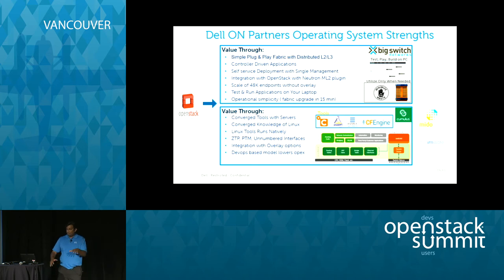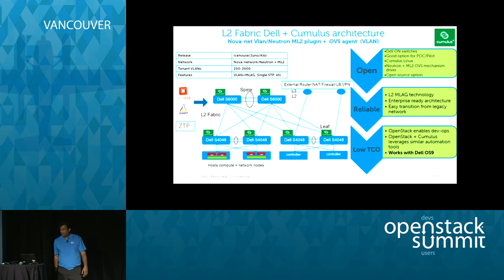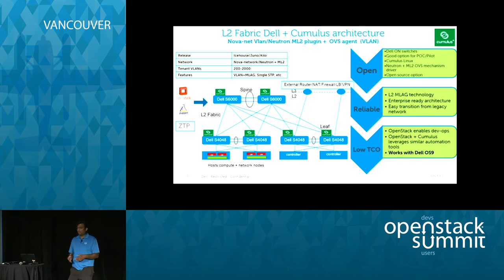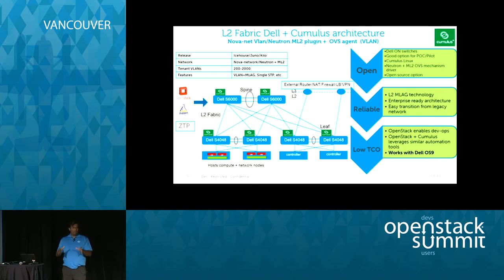Midokura and VMware are also partners that both Cumulus and Big Switch integrate with from an overlay standpoint. Going into the actual solutions — and a disclaimer: these are not all possible solutions. I'm going to talk about some approaches to give you a sense of what you can do, from starting out to more complex solutions. There's really no end to the number of solutions you can approach using these different OS partners.